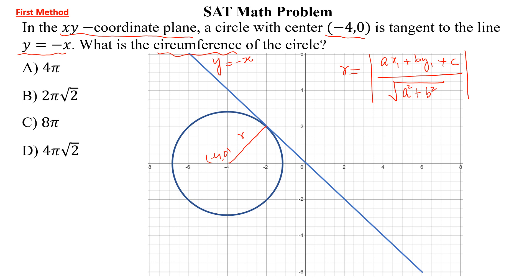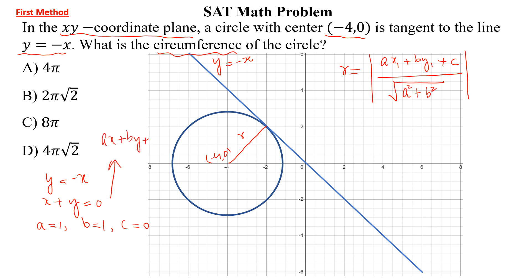Now this is the equation of the line y = -x. We can write this as x + y = 0. Comparing with ax + by + c = 0, here a = 1, b = 1, and c = 0.